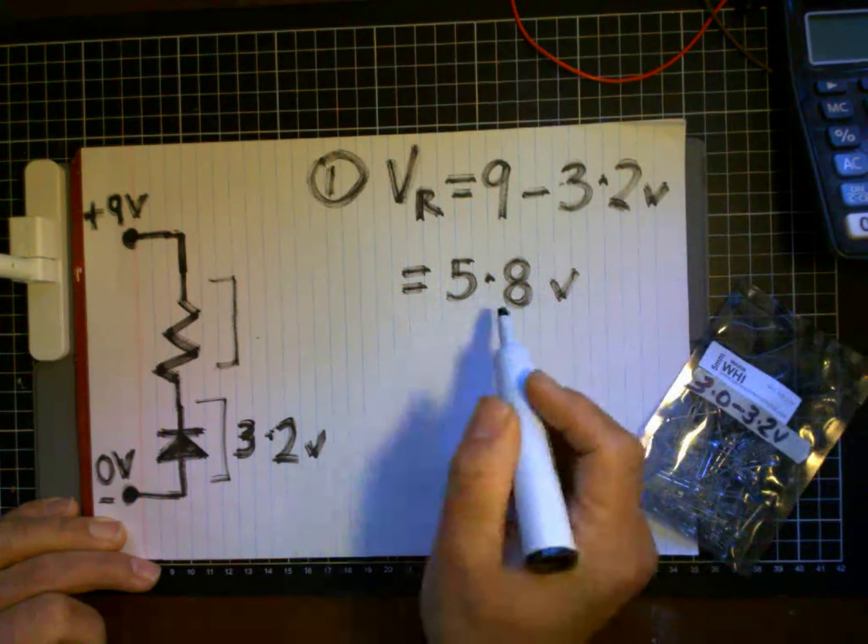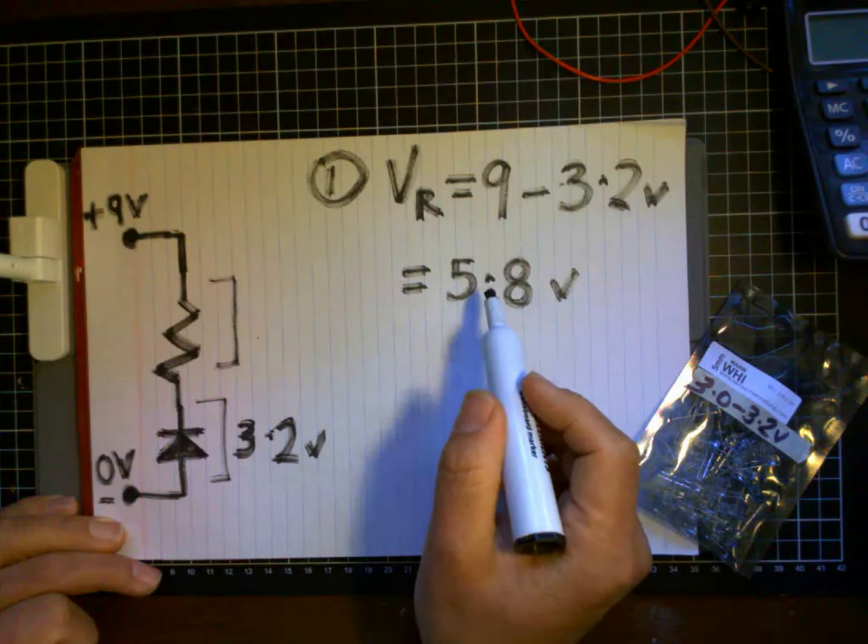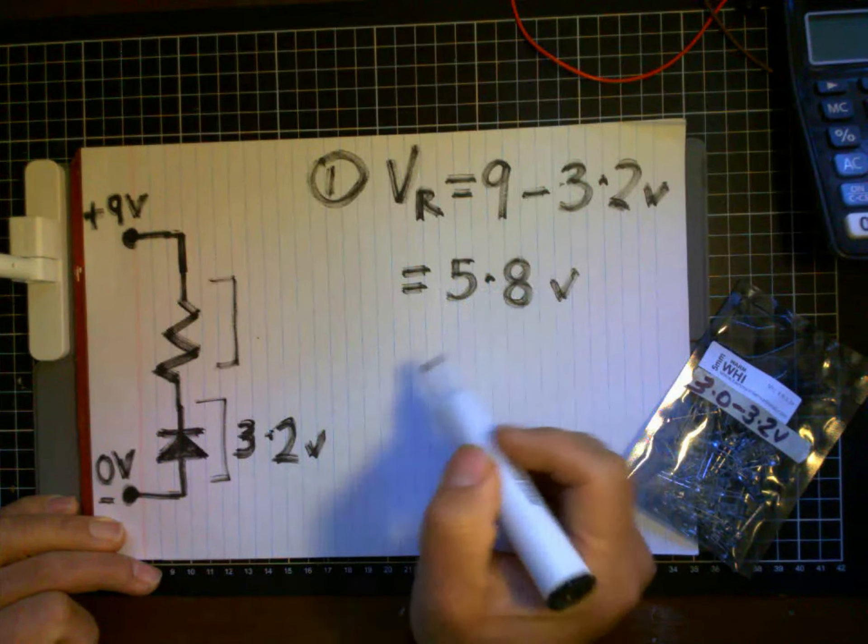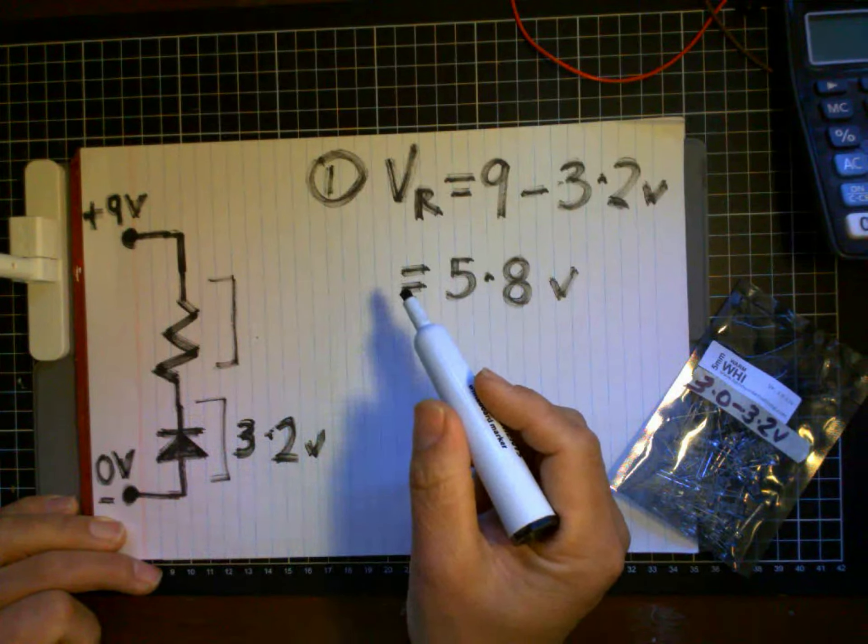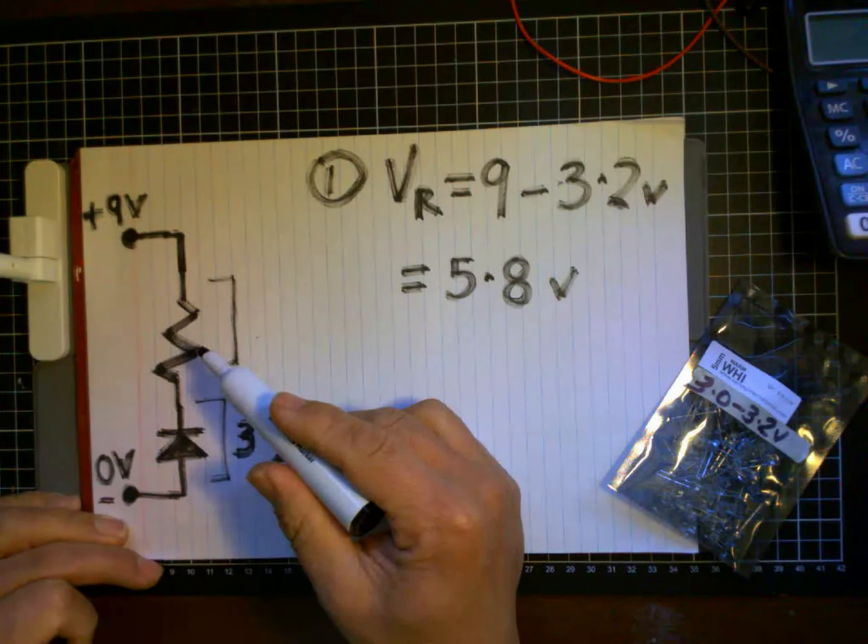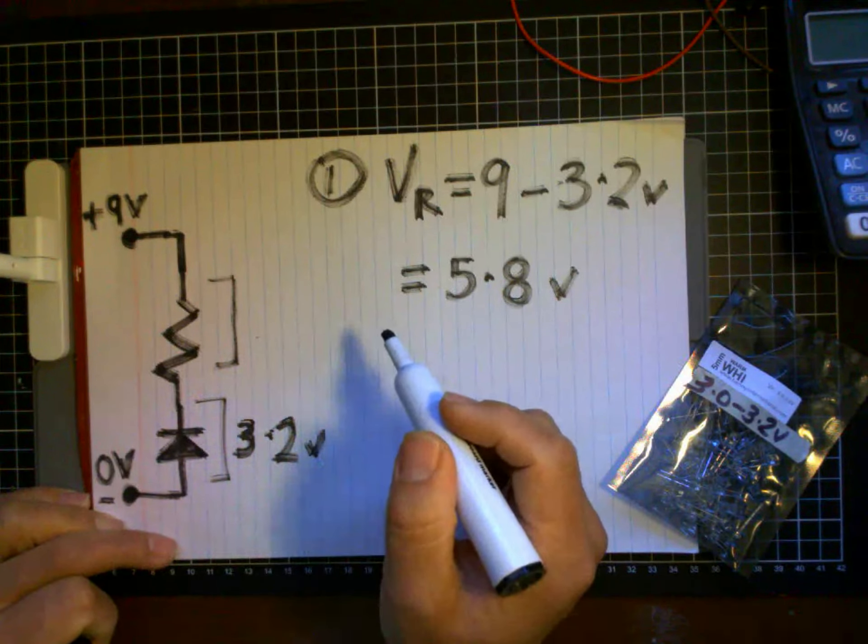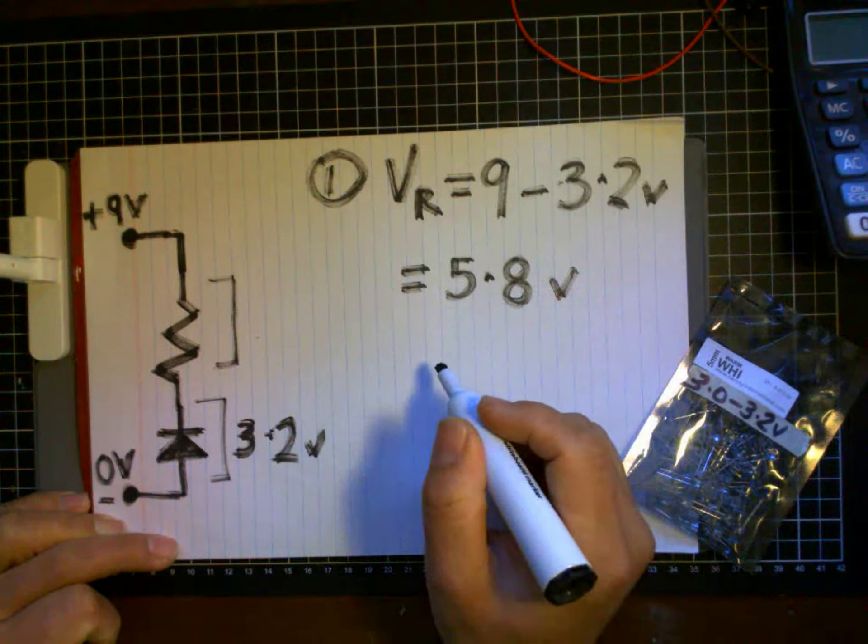Now when you think about it, this is a silly design because if I still have 5.8 volts left, well, why don't I just insert another LED rather than waste my voltage in a resistor which does almost nothing except convert electricity to heat? But anyway, I'm just showing this for demonstration purposes.